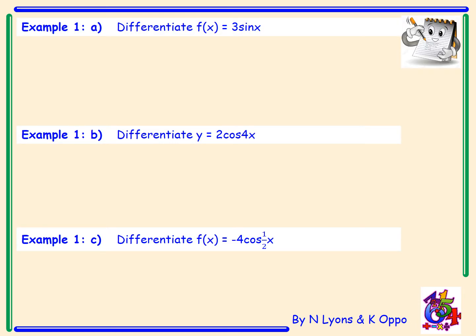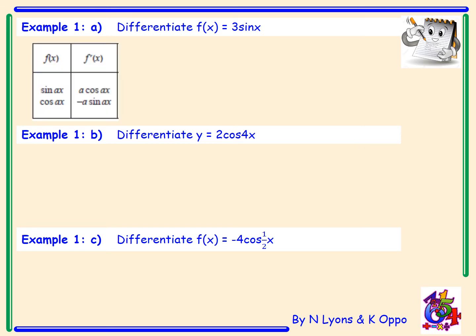Example 1a: differentiate f(x) = 3 sin x. Looking at our table of standard derivatives, I want to differentiate 3 sin x. Here a is just 1 — there's nothing before the x — and the 3 is a constant, so we just leave it alone. The derivative of sine x is cos x, so f'(x) = 3 cos x. The 3 is simply a multiplier.